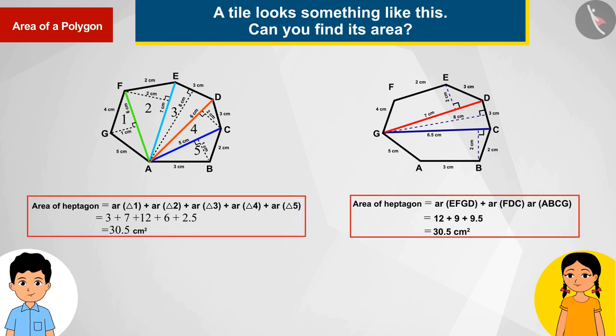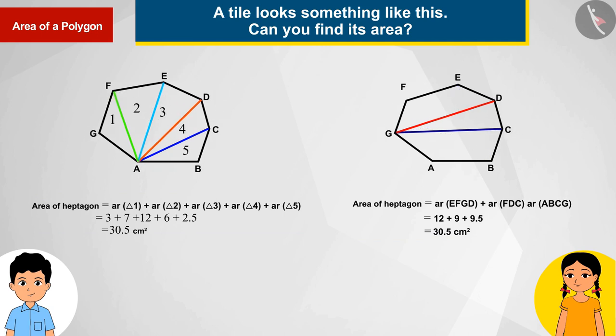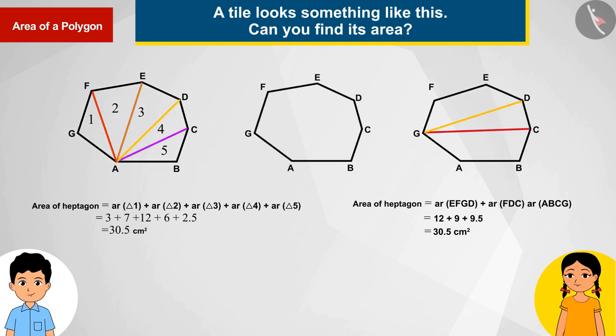Thus by dividing the polygon into its parts whose formula for the area is known, one can get the area of the entire polygon. Here we discussed two situations and the area of polygon will be equal in both the cases.